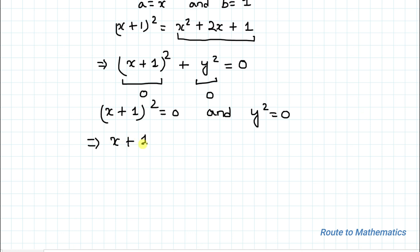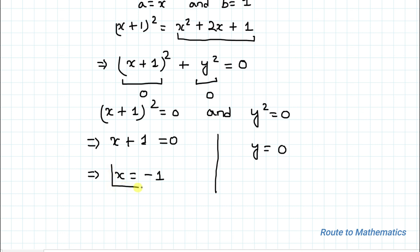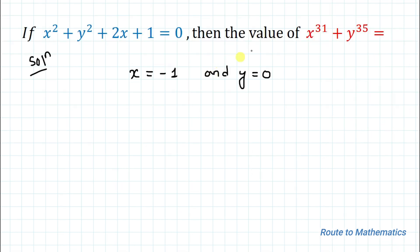From (x + 1)² = 0, we get x + 1 = 0, so x = −1. Similarly, from y² = 0, taking the square root gives y = 0. So the value of x is −1 and y is 0.